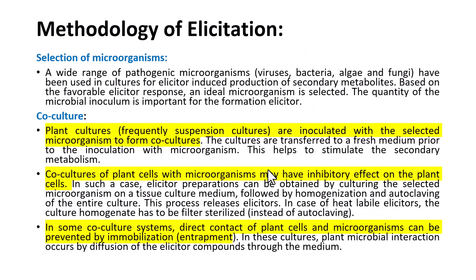Regarding the methodology of elicitation: the first step is selection of microorganisms. Microorganisms can be selected from a wide variety including viruses, bacteria, algae, or fungi that can produce a response and help in secondary metabolite production. Based on a favorable elicitor or receptor response, an ideal microorganism is selected, and the quantity of microbial inoculum is very important.